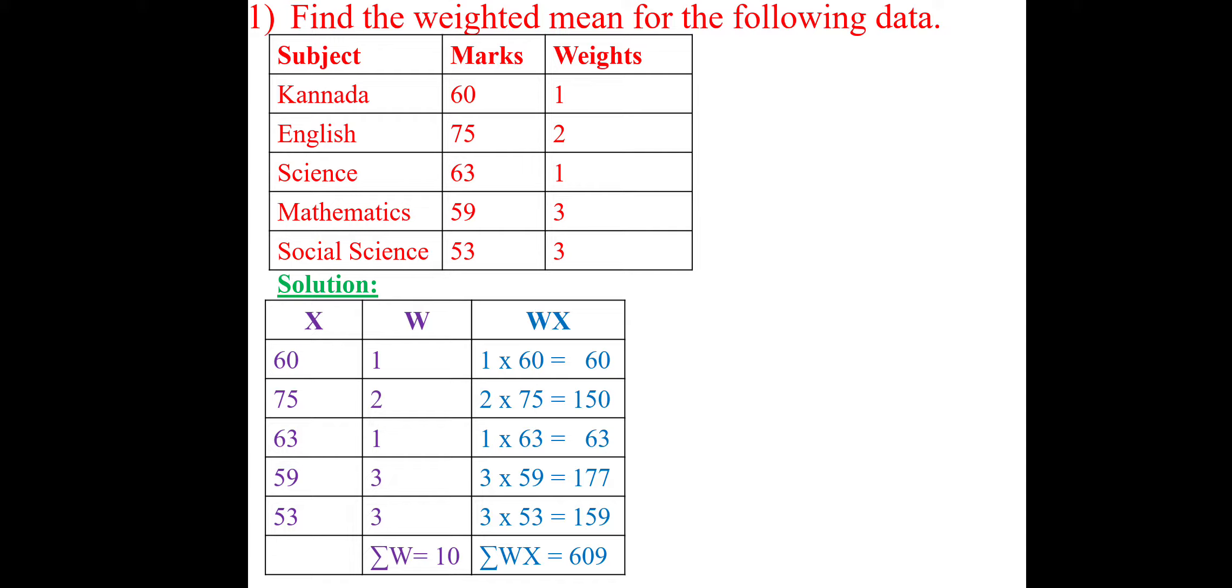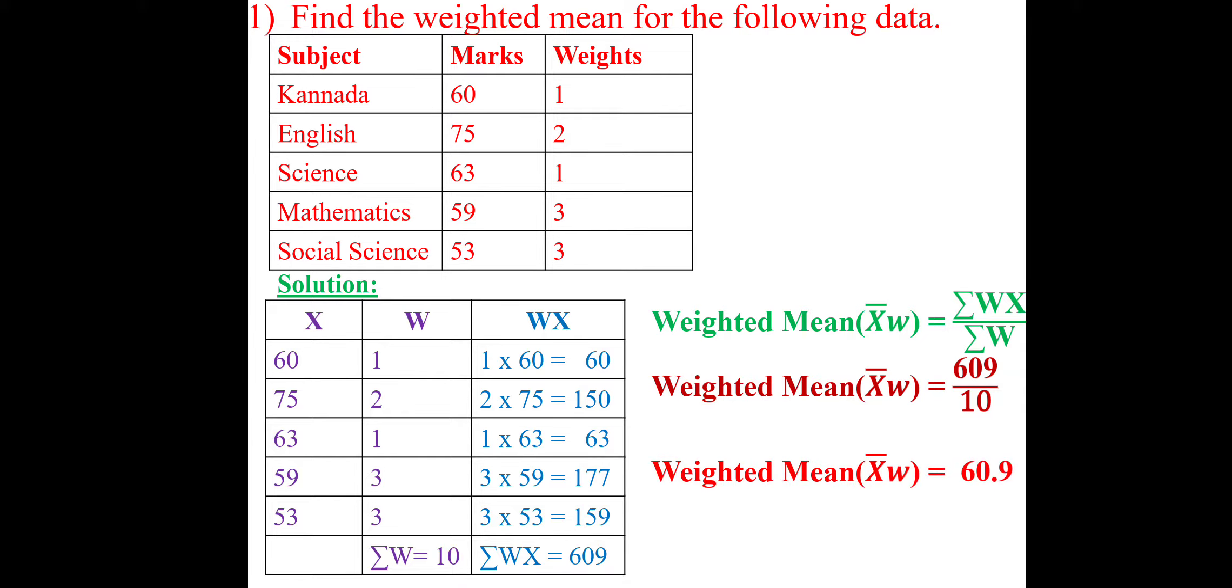So, this is the way we can total because the formula is weighted mean equal to X bar W equal to summation WX divided by summation W. So, substitute the value: 609 divided by 10. So, 60.9 is the weightage. So, in this way, weighted mean will be calculated. Here, items will be given. What is the weightage will be given for that?